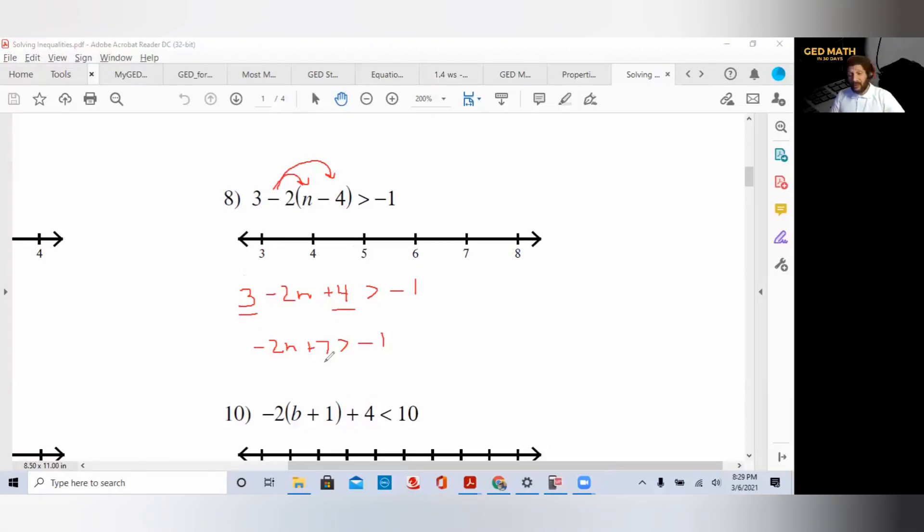We want to get the variable by itself, so we can get rid of all the terms that do not contain the variable. We can get rid of plus 7. The opposite of plus 7 is minus 7. Whatever we do on one side, we do on the other. We have to keep the balance on both sides of the equation. We got minus 2n. The 7s cancel. Greater than, two negatives we add the numbers and keep the signs. Minus 2n is greater than minus 8.